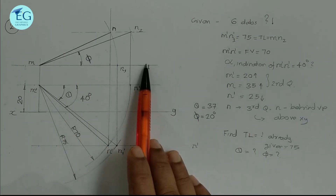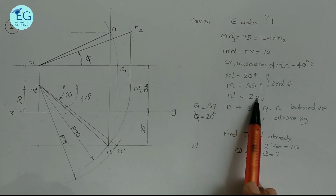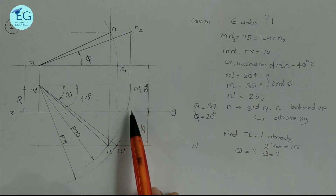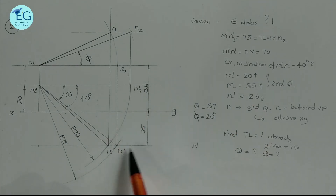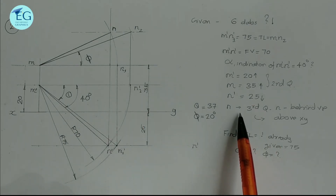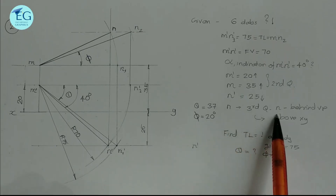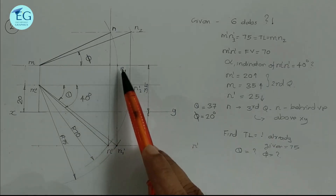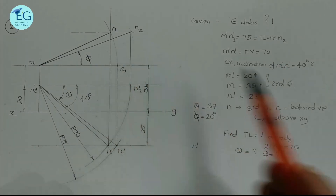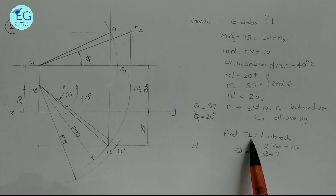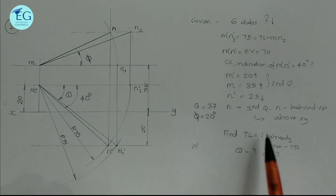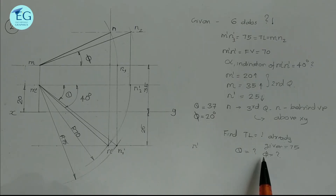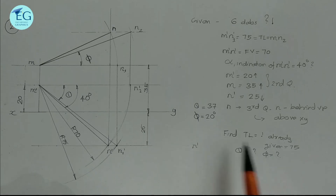N is 35mm above HP. N' is 25mm below HP, meaning N' is 25mm above the XY line. In the second quadrant it can be 80mm behind VP. We need to find: inclination with HP (theta) and inclination with VP (phi).